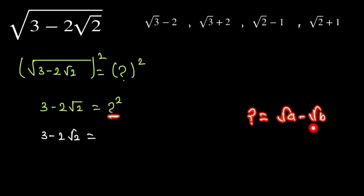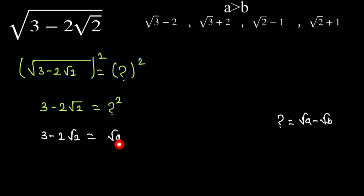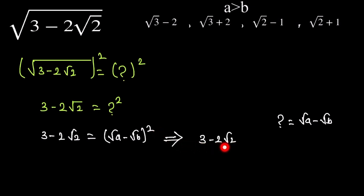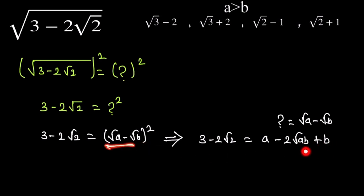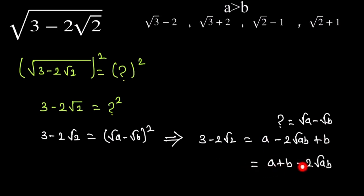We put the value (√a - √b) and now square it. We get 3 - 2√2 = a - 2√(ab) + b, which equals a + b - 2√(ab). We equate this with the original expression.